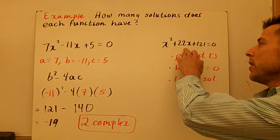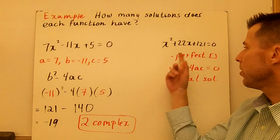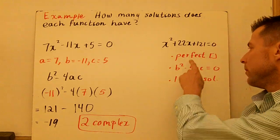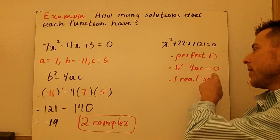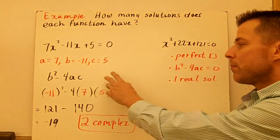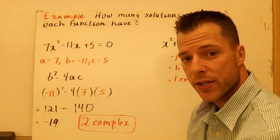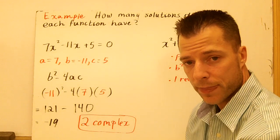Lastly, x squared plus 22x plus 121 equals zero. I kind of cheated a little bit. I knew this is a perfect square. So I know that B squared minus 4AC is going to be zero. So there's one real solution. You could plug in, but if you see that it's a perfect square, you're going to know the discriminant is zero. You're going to know it's one real solution.